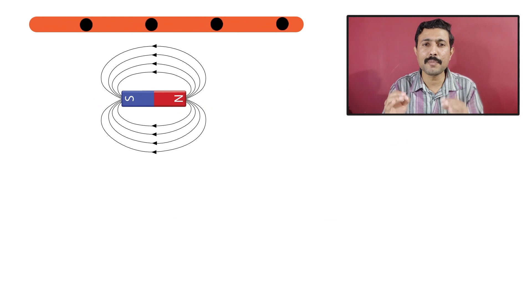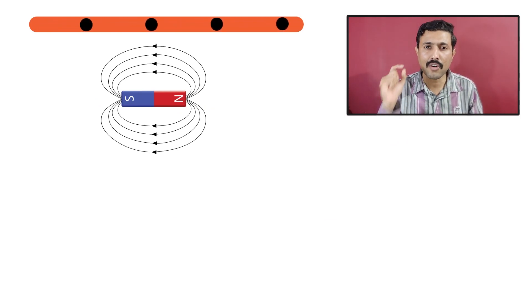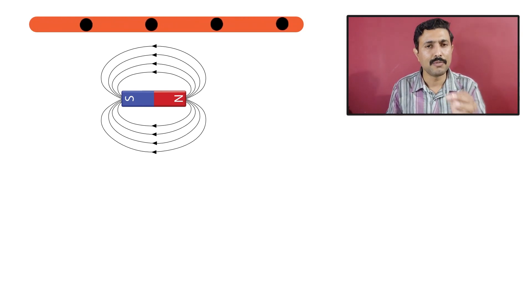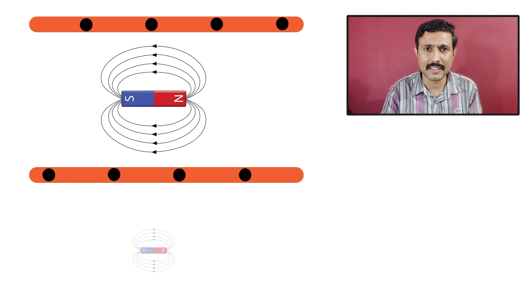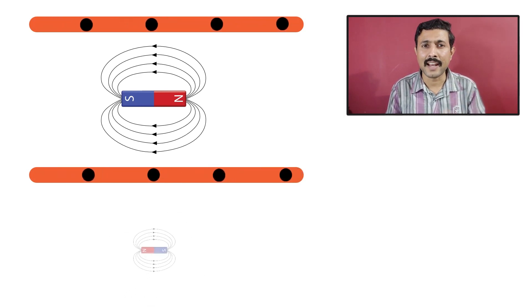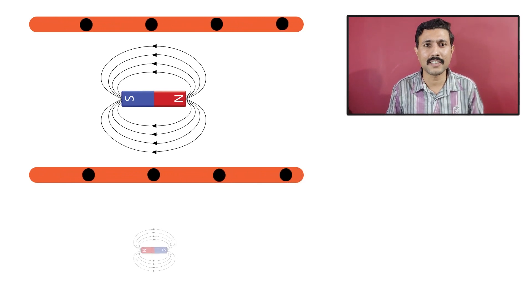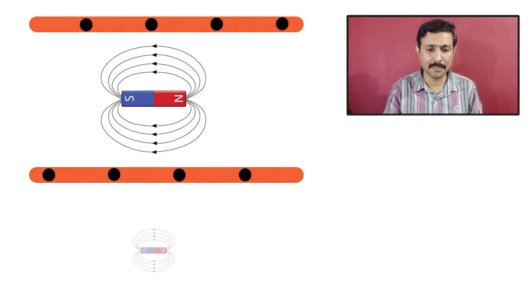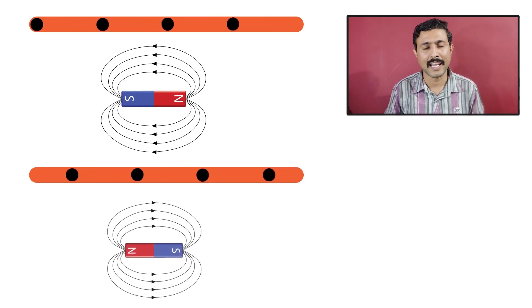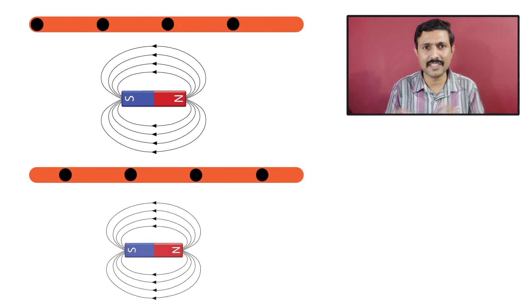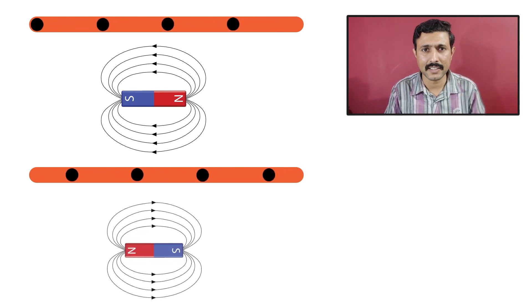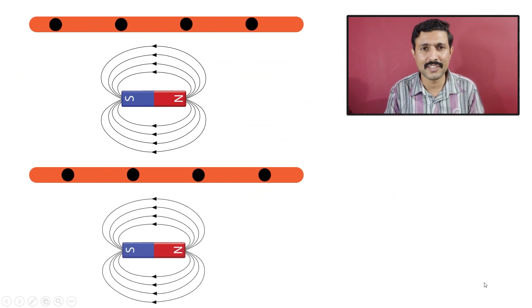Before we jump into the transformer, we should have some basic idea about AC and DC magnetic fields. When we flow a DC current through a conductor, it produces a magnetic field that is constant in magnitude and direction — it looks like a permanent magnet. Whereas when we flow AC current through a conductor, the current's magnitude is continuously changing and its direction reverses every half cycle, so the magnetic field also continuously changes its magnitude and direction every half cycle.